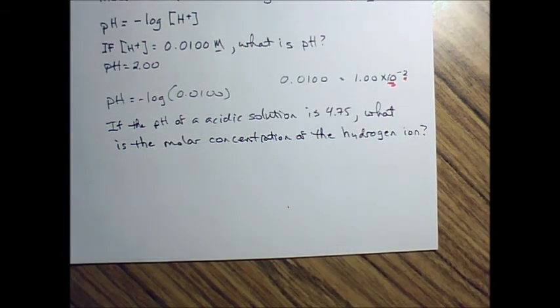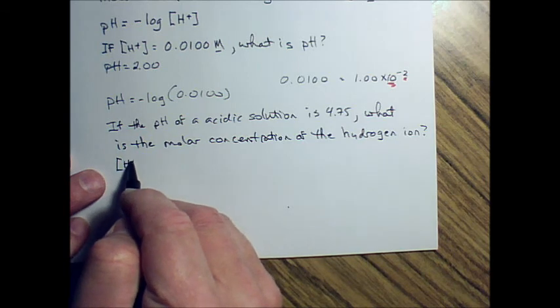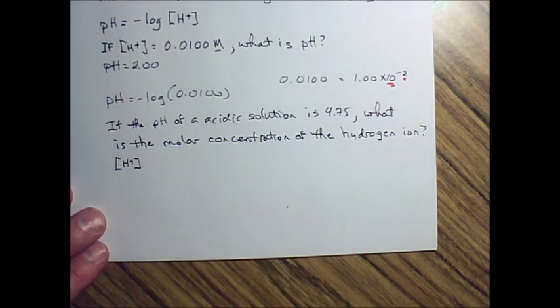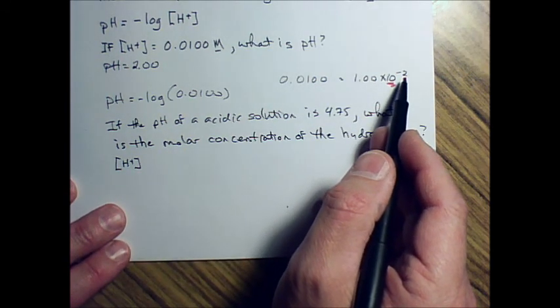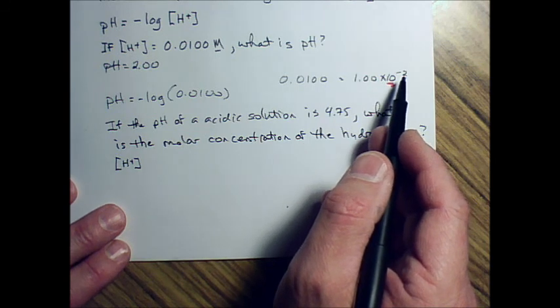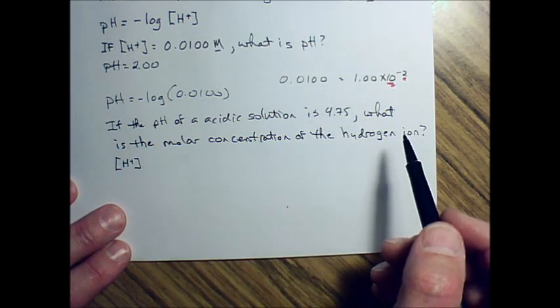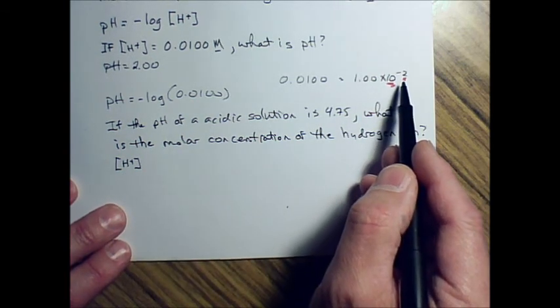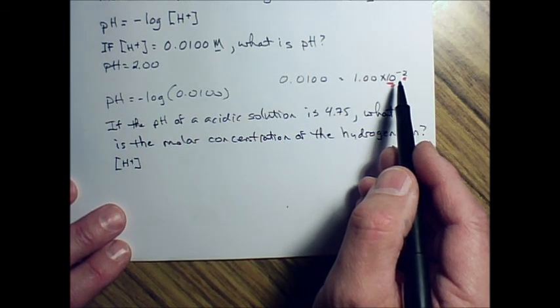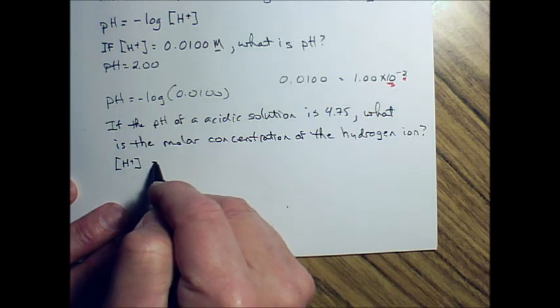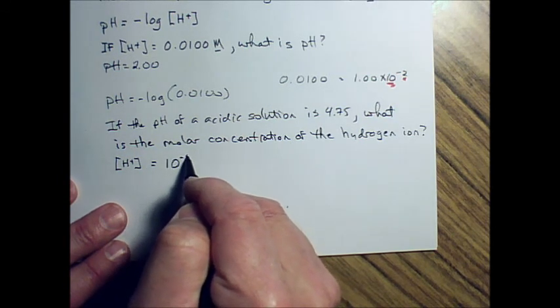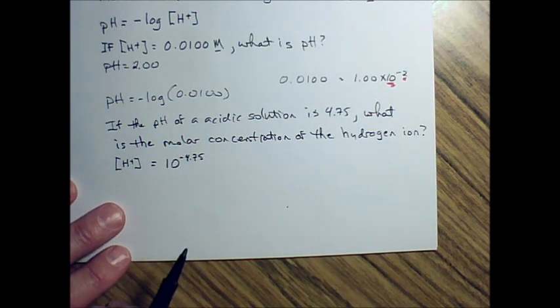If the pH of an acidic solution is 4.75, what is the molar concentration of the hydrogen ion? Remember, the symbol for molar concentration of hydrogen ions is this bracket with the hydrogen ion symbol in there. Since a pH is a logarithm, a negative logarithm, then we can undo that pH to find the actual concentration by putting the pH number in the exponent position and changing the sign. So therefore, with this information, we can find it by doing this. This is 10 to the negative 4.75.